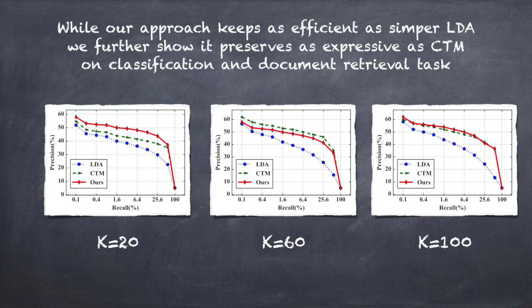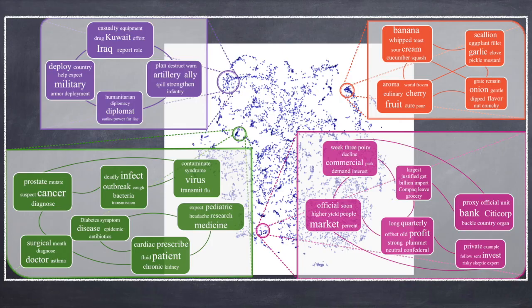The three figures show the performance of the document retrieval tasks on three different topic number settings. This is the correlation visualization of our approach on 2 million New York Times articles with 10,000 topics.